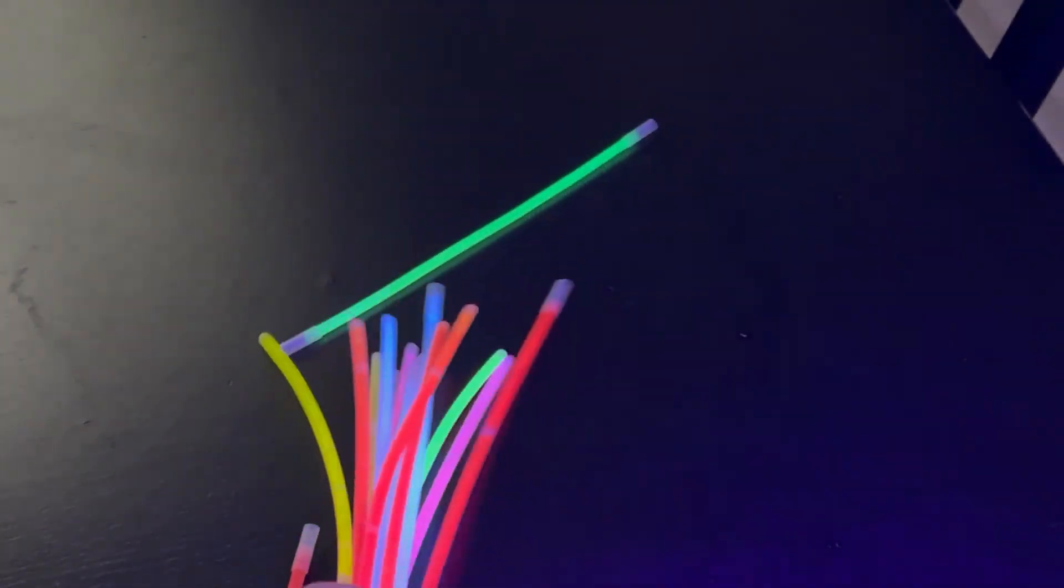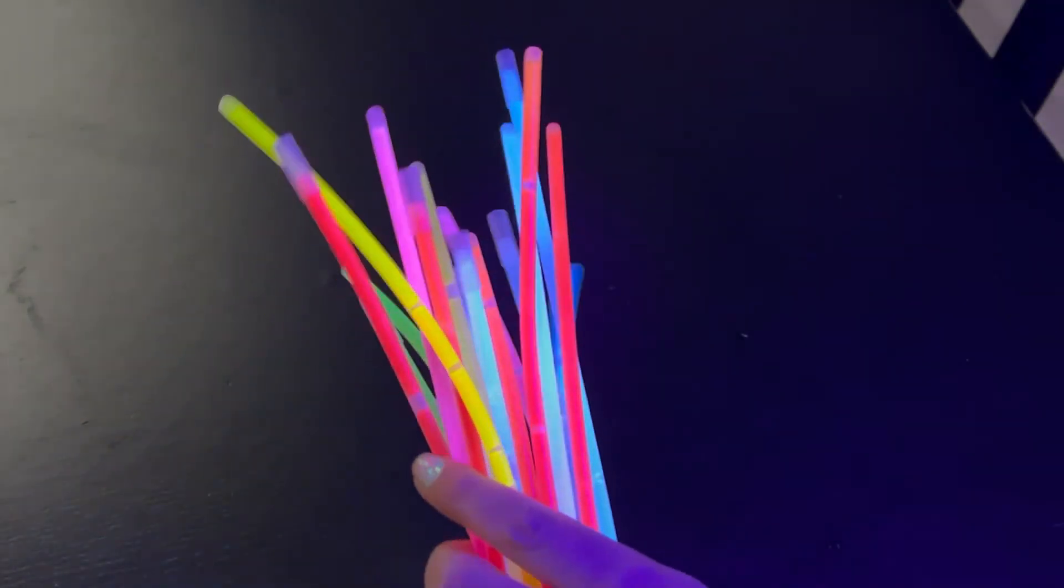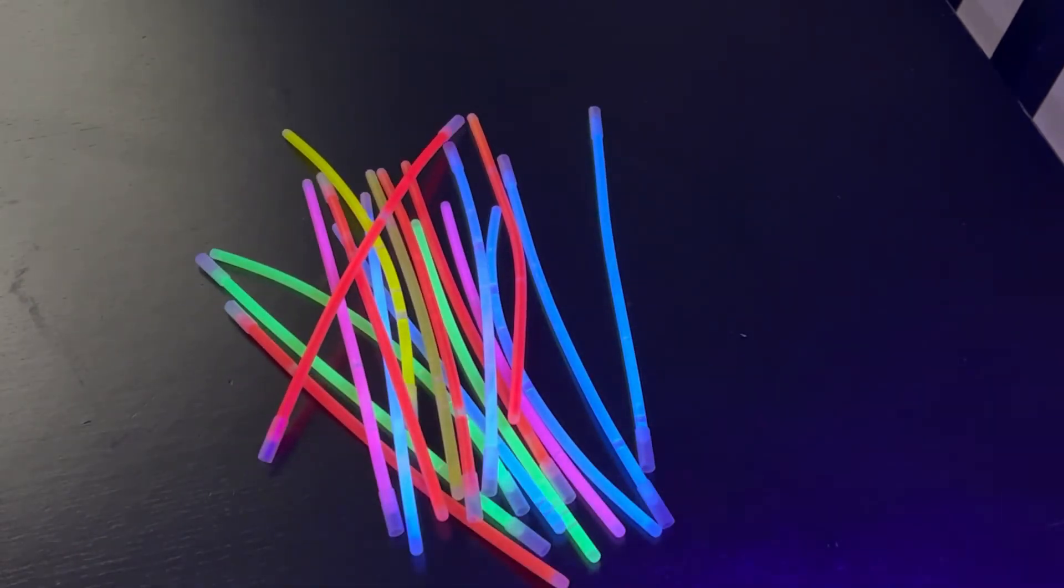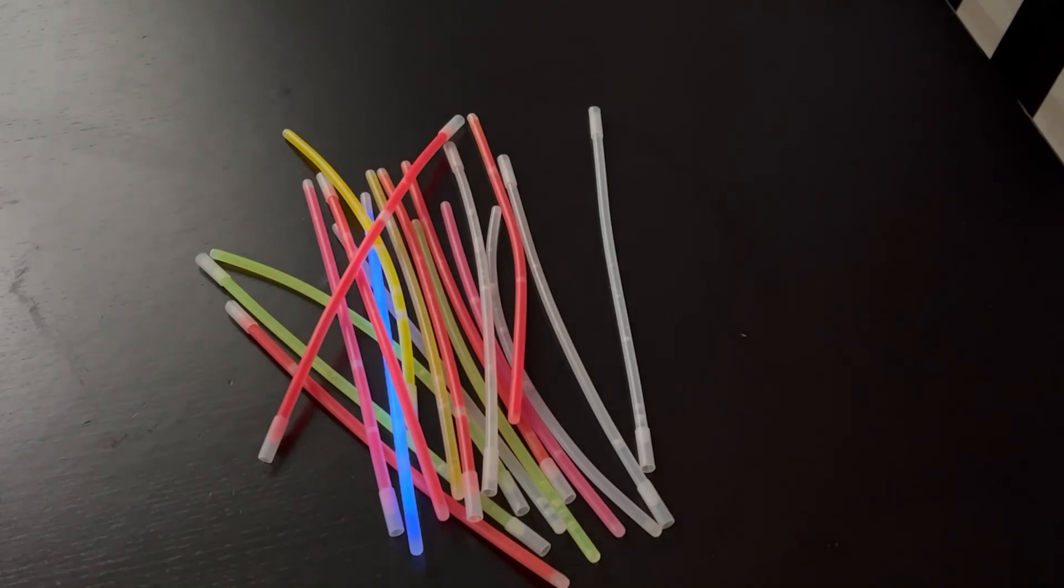One of the yellow sticks did not work so I could toss that one, but I'll be keeping the rest for now. There you have it, used glow sticks still glow under UV blacklight. Thanks for watching.